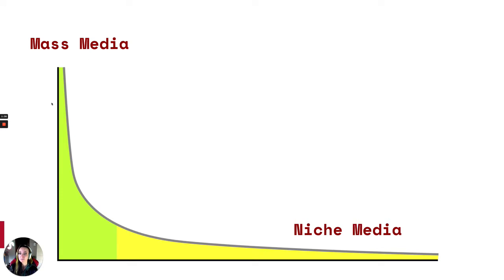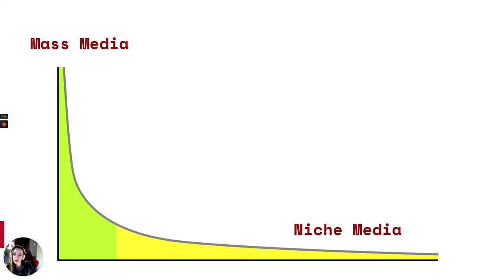The reason the left side is tall is because it's showing the number of media — this green area is the small amount of media that has mass appeal. And then over on the right, there are tons and tons of media that are only appealing to small groups of people. This yellow part is what we call the long tail — pieces of media which only a few people are interested in. So you can think of this axis as interest: a few things that pretty much everyone's interested in, and a lot of things that just a few people are interested in.